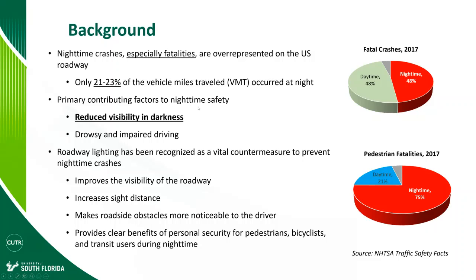The nighttime safety issue is majorly caused by reduced visibility in dark environments, accompanied by drowsy and impaired driving behavior. The reduced visibility in darkness is the primary contributing factor to nighttime safety. Roadway lighting has been recognized as an effective countermeasure to prevent nighttime crashes. It can improve visibility of the road, increase sight distance, make roadside objects more noticeable to drivers, and provide clear benefits of personal security for pedestrians, bicyclists, and transit users.